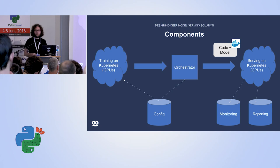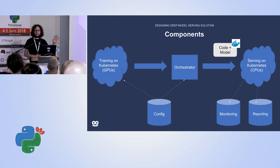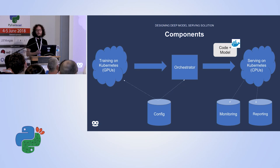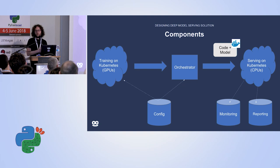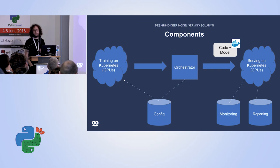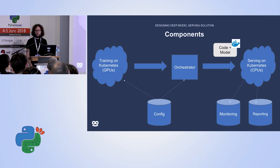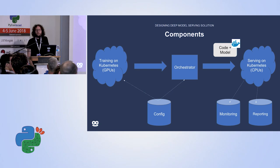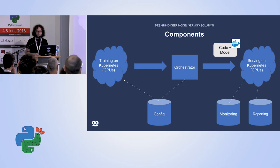The key components of the system: training on GPUs producing models; an orchestrator that decides what to train, when, and where to put it — it trains the model, packages it with TensorFlow Serving code, and puts it on Kubernetes. Two other key components are configuration — somewhere that holds directions for your variants on how to train and deploy them — and monitoring/reporting capabilities, because otherwise all your loops are incomplete. You need something to orchestrate, somewhere to keep configuration, monitoring, reporting, and Dockers running on Kubernetes.